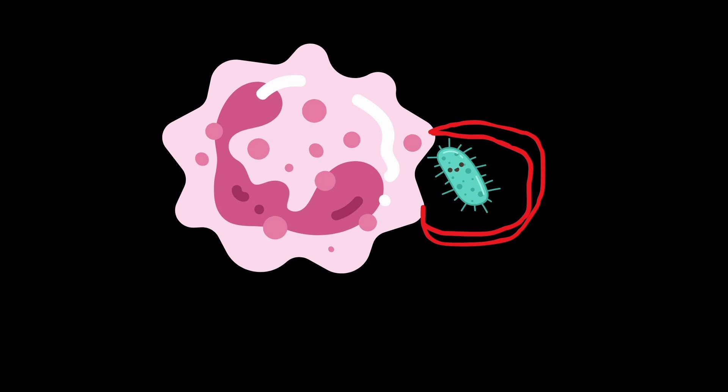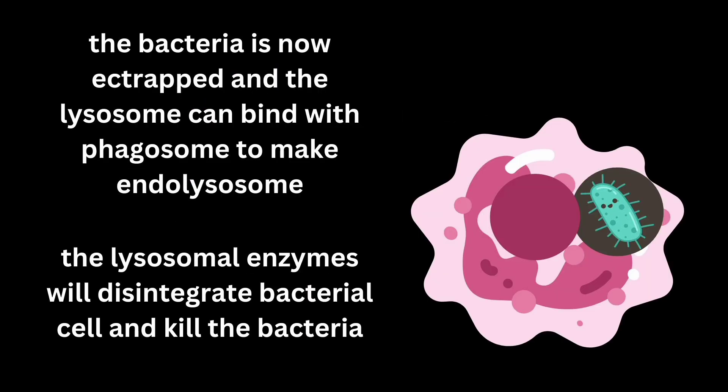In the diagram you can see the phagocyte engulfing the bacteria in its pseudopods. After entrapping the bacteria, it ingests them in the form of a vacuole. The bacteria is now entrapped within the phagocyte, and lysosomes bind with the phagosome to make phagolysosomes, also known as secondary lysosomes. Lysosomal enzymes are released into that vacuole, disintegrating the bacterial cell and killing the bacteria. This is the process of phagocytosis.